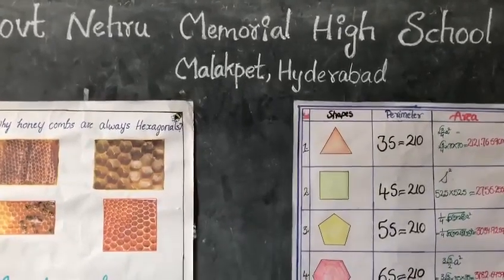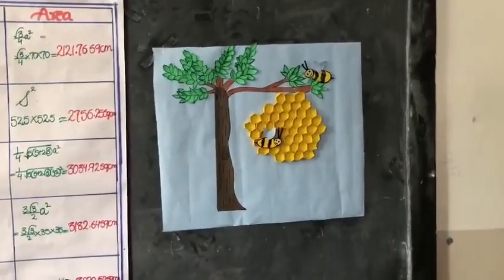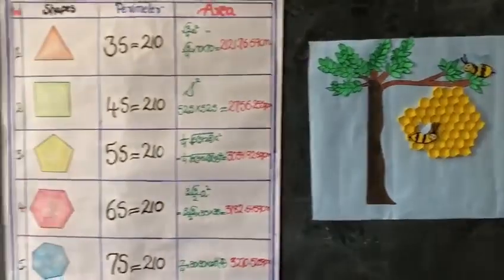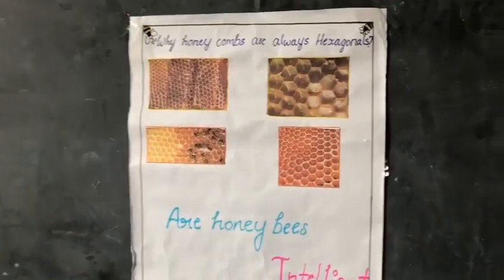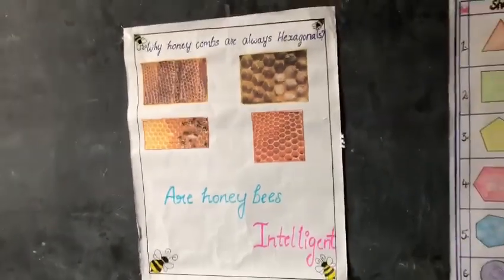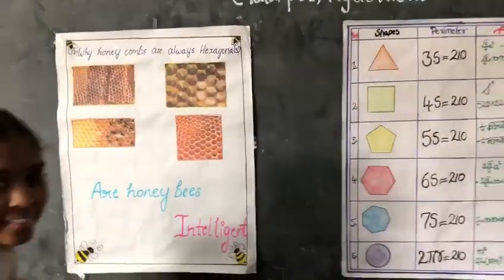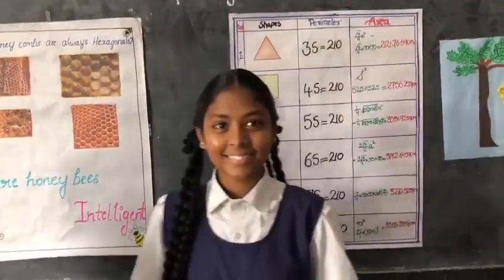Have you ever observed the patterns in a honeycomb? Why do you think we always see hexagonal arrangement here? Is it a mere coincidence, or is there an interesting mathematical reason behind it? Let us listen to our 10th class students.